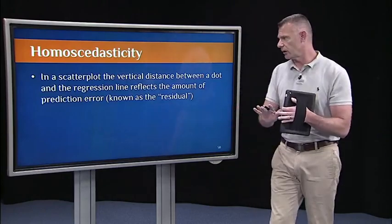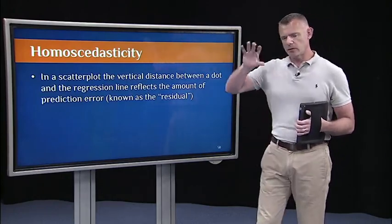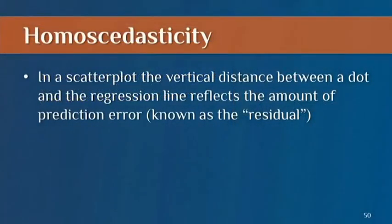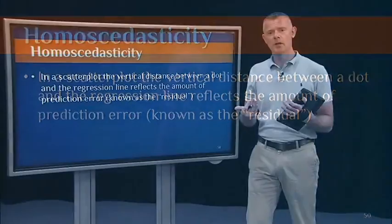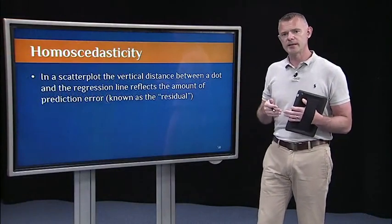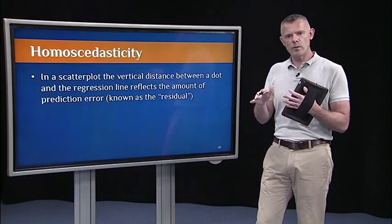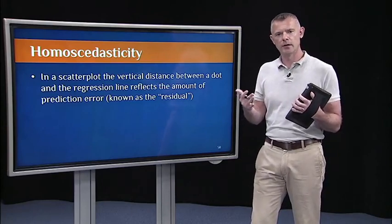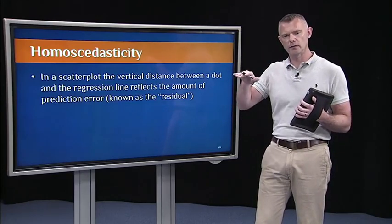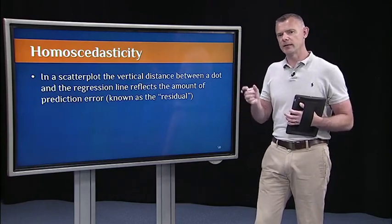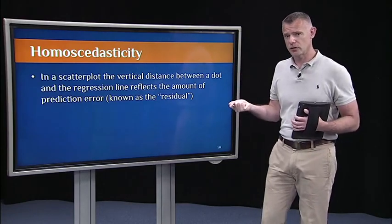To give you the definition: in a scatter plot, all the dots represent individual cases or subjects. The vertical distance between a dot and the regression line — the prediction line — is the prediction error for that individual, also known as the residual. The idea of homoscedasticity is that those residuals are not related to X. Because if they were, we might have some sort of confound in our study. The prediction errors should just be chance errors — they shouldn't be systematic.